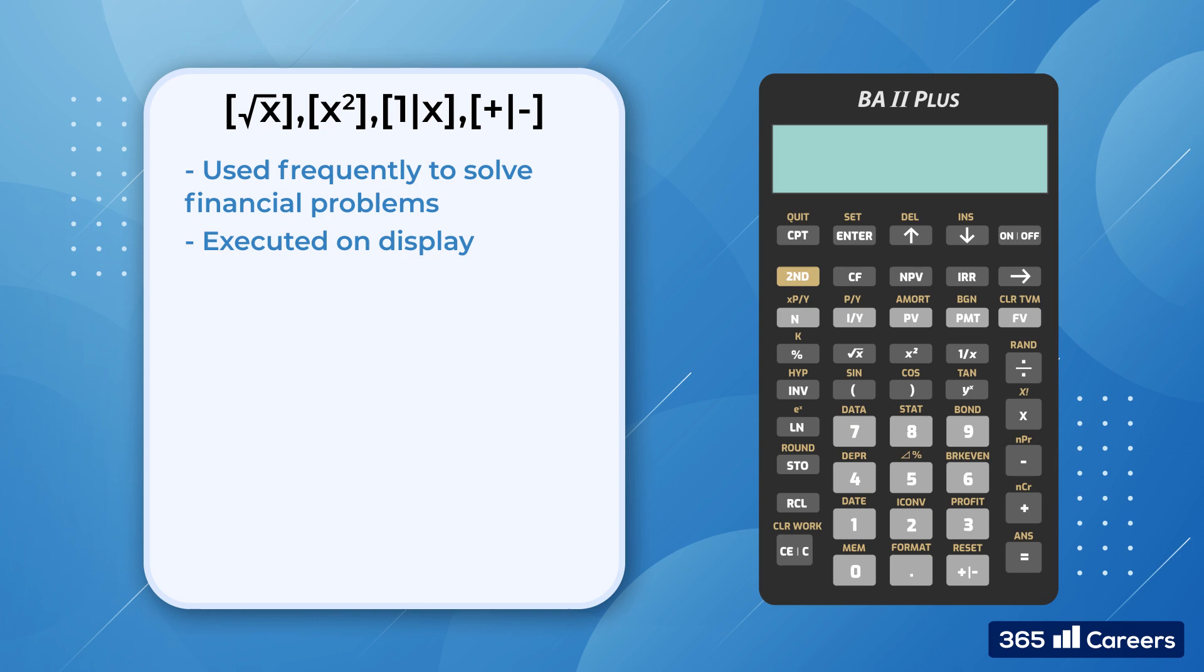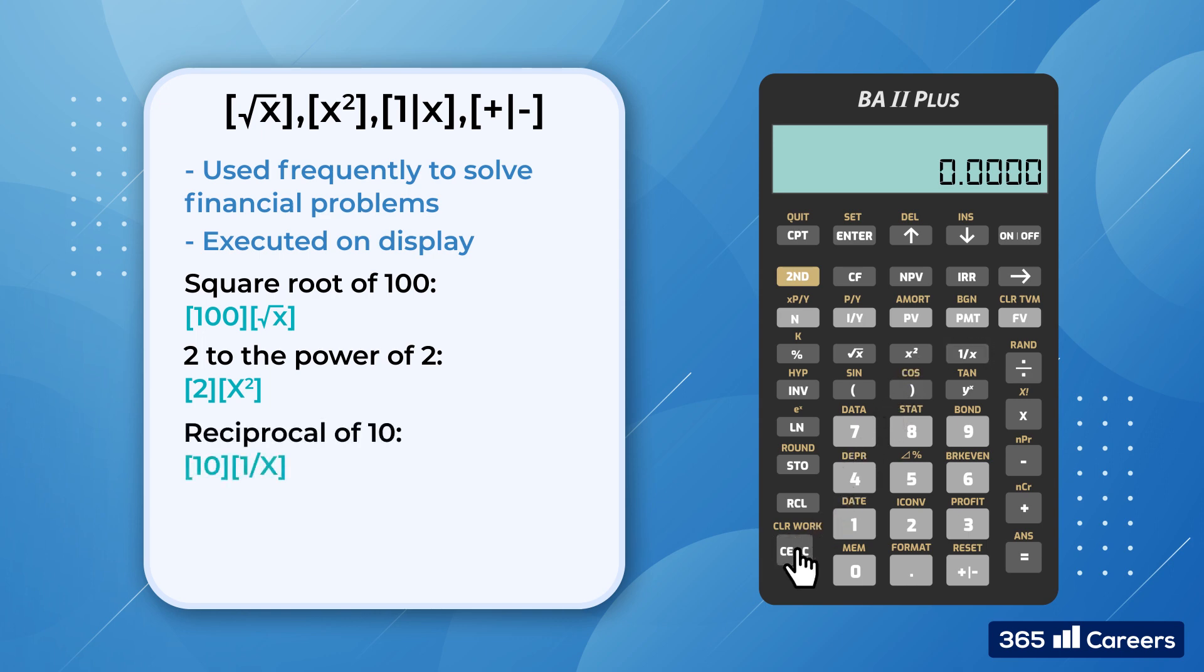Okay, first we would like to obtain the square root of 100. This should be easy. I'll type 100 and we'll press the square root of x to obtain 10. Then we need to raise 2 to the power of 2. That's also a piece of cake. We just type 2 and hit x to the power of 2 to obtain 4. The third button is 1 over x. If we press 10 and then 1 over x, we should obtain 0.1. Why? Because 1 divided by 10 is 0.1, so the calculator gives you the reciprocal of 10.